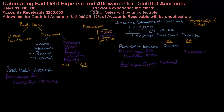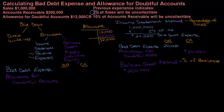The first balance sheet method we're going to look at is called percentage of receivables. There's also another method and we'll talk about that in another video. Under the percentage of receivables method, I'm going to look at my accounts receivable of $200,000 and take a percentage of it. According to this, ten percent of accounts receivable will be uncollectable, so I multiply by ten percent or 0.10, and that gives me twenty thousand as well.